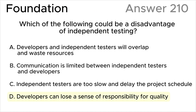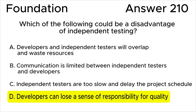The correct answer is D. Developers can lose a sense of responsibility for quality, according to ISTQB. This statement highlights a potential drawback of independent testing, wherein developers might become less accountable for the quality of their work if they rely solely on independent testers to identify defects. This could lead to a decrease in overall product quality, as developers may rely too heavily on independent testers to catch errors instead of actively striving to produce high-quality code from the outset.